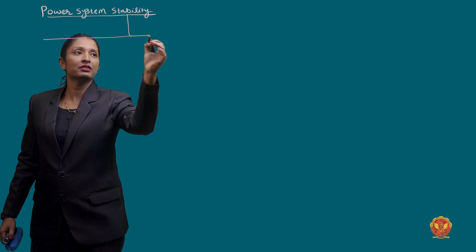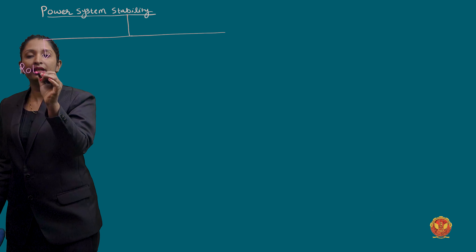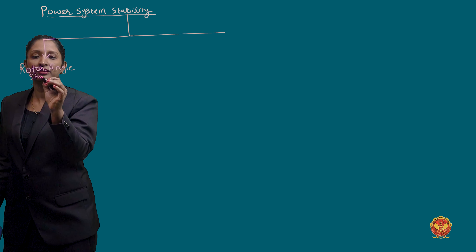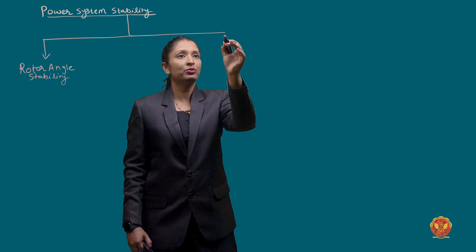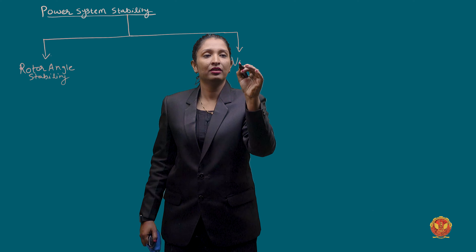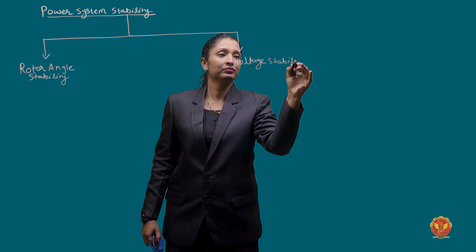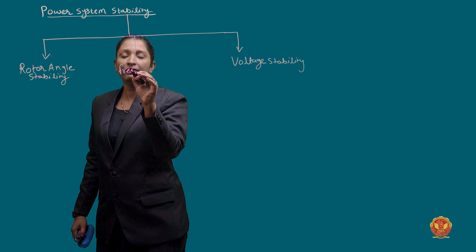Hello everyone. Today we will see the classification of power system stability. Power system stability can be classified in three ways. The first is the rotor angle stability. The second is the voltage stability. The third is the frequency stability.